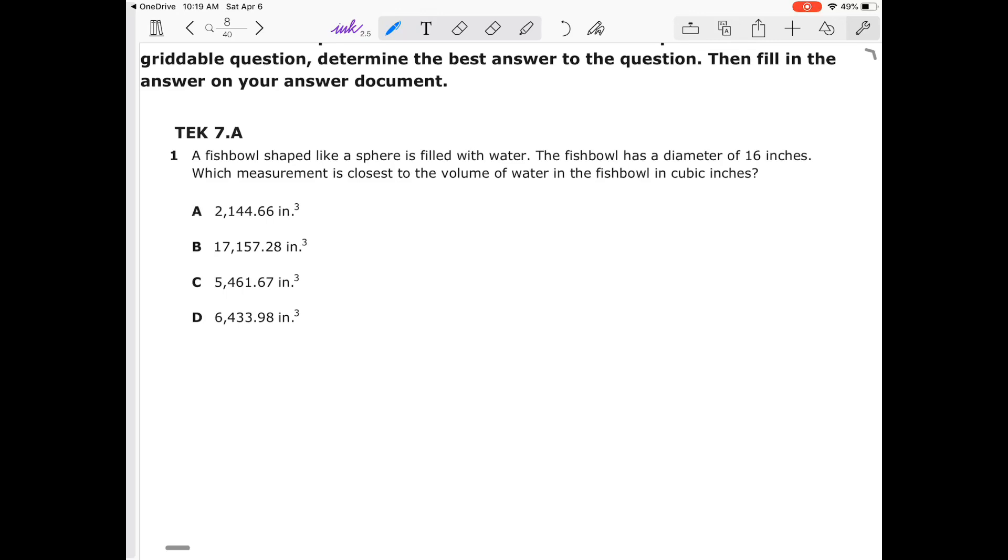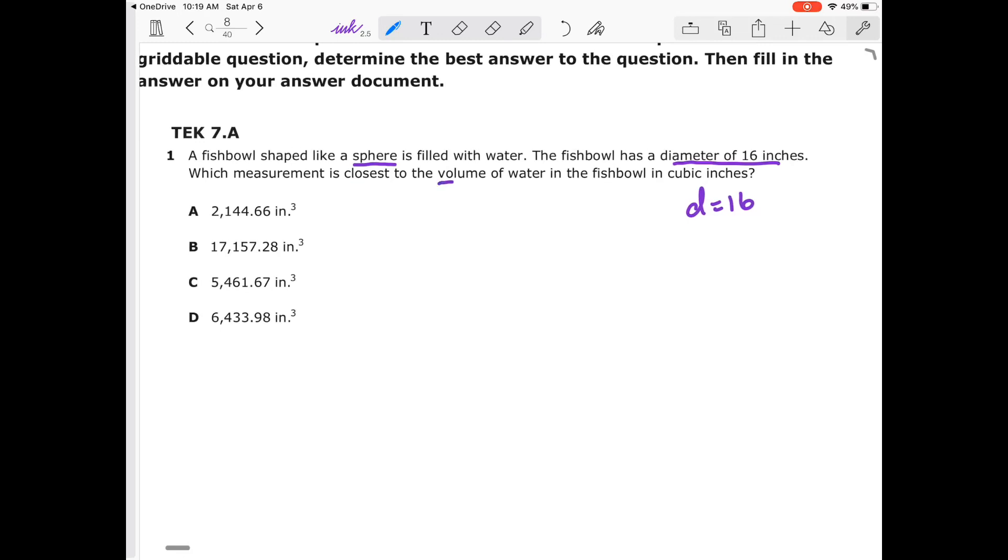Our first question says a fishbowl shaped like a sphere, so that's our keyword, is filled with water. The fishbowl has a diameter of 16. What is the measurement closest to the volume of water in the fishbowl? Well, volume for a sphere is equal to four-thirds pi r cubed. And again, that is on our STAR reference material.